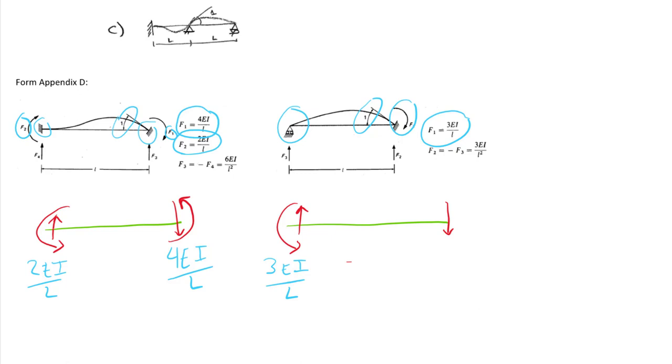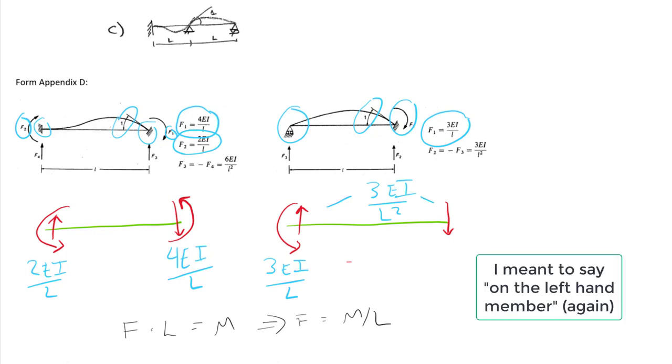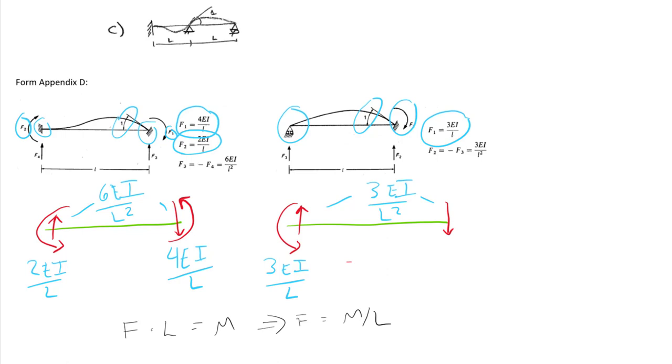Now in terms of the value, I have that a force times the length has to equal a moment, so the force that I'm looking for is the moment divided by the length of the member. In the case of the right-hand member, the force is going to be 3 EI over L squared. On the left-hand member, that force is going to be 4 plus 2, or 6 EI over L squared. And we'll note that these correspond to the tabulated value, but I prefer to go from the physical argument instead of working from the table.